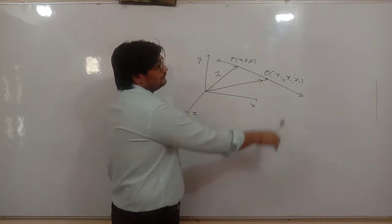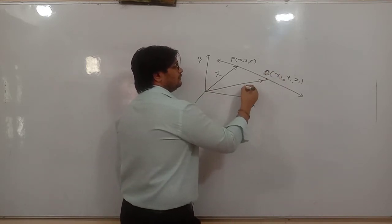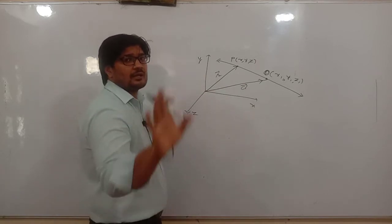The position vector of point Q. This is Q's position vector. I will give it this name. I will keep it like this.